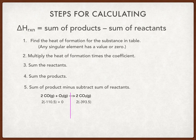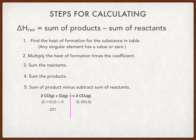For our products it's going to be the coefficient two times negative three ninety-three point five. The negative one ten point five and negative three ninety-three point five come from a table — you'll see that table in the next slide. Two times negative one ten point five gives you negative two twenty-one, and two times negative three ninety-three point five gives you negative seven eighty-seven.